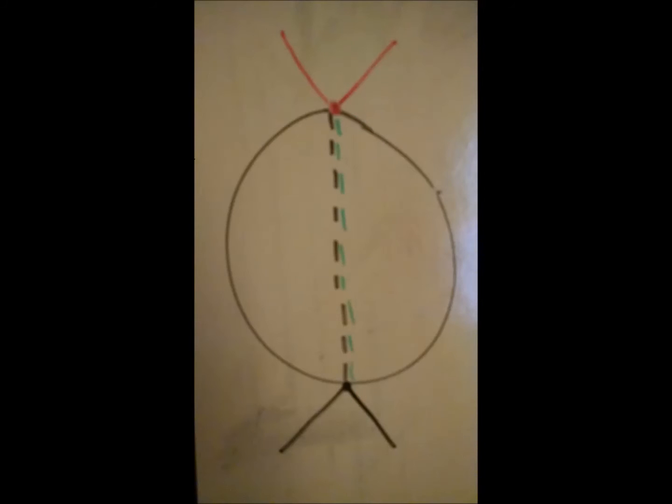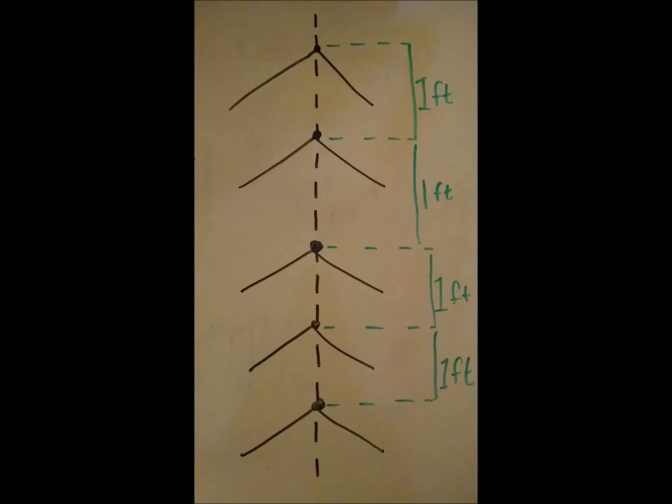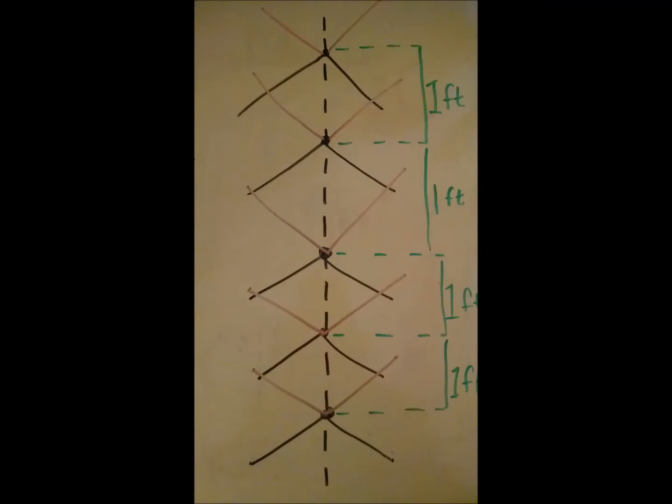This is an aerial view of what it should look like, and this is the bow ties on the front. You can see that they are one foot apart, you want to make sure that this is very accurate so that your signal is picked up properly. And I just drew in the red ones, which are the ones on the back of the PVC pipe, but they are aligned with the front ones, and they are also one foot apart from each other.